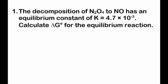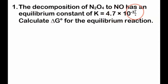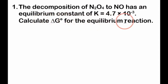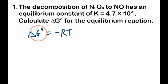Problem one: the decomposition of N₂O₄ to NO has an equilibrium constant K = 4.7 × 10⁻³, which is unitless as K always is. Calculate the standard Gibbs free energy change for the equilibrium reaction. We're going to start easy and progress to more challenging questions. We'll use the equation: the change in Gibbs free energy equals −RT ln K.